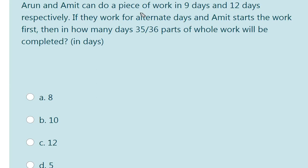Arun and Amit can do a piece of work in 9 days and 12 days respectively. If they work for alternative days and Amit starts the work first, then in how many days 35 by 36 parts of whole work will be completed. So, this is the question.